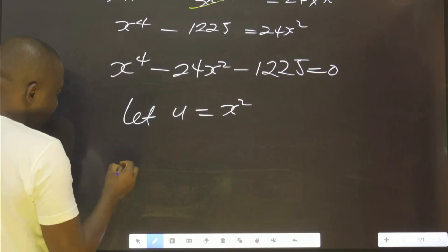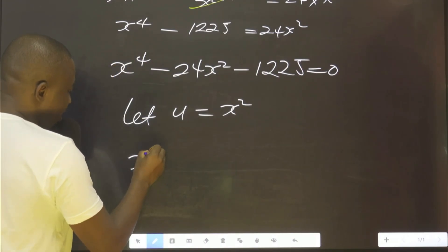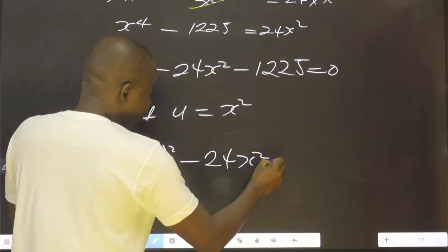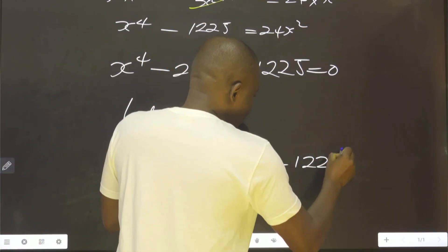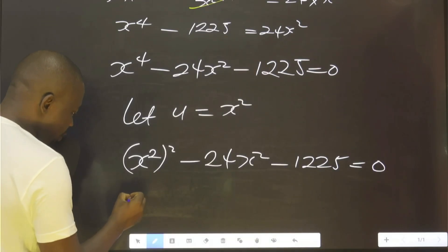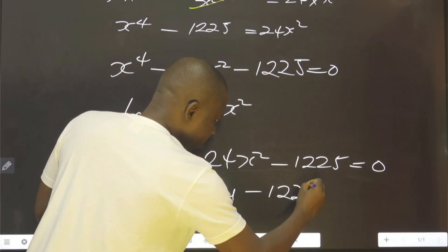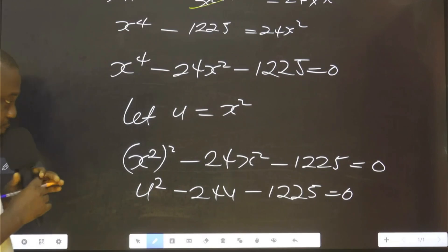Therefore, here alone will be x², and 24x². Therefore, u can take the place of this x². So we have u² - 24u - 1225 = 0.